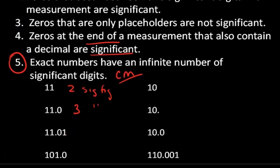In this case, I have a zero in between, so that has to be significant. So in this case, there's four sig figs.